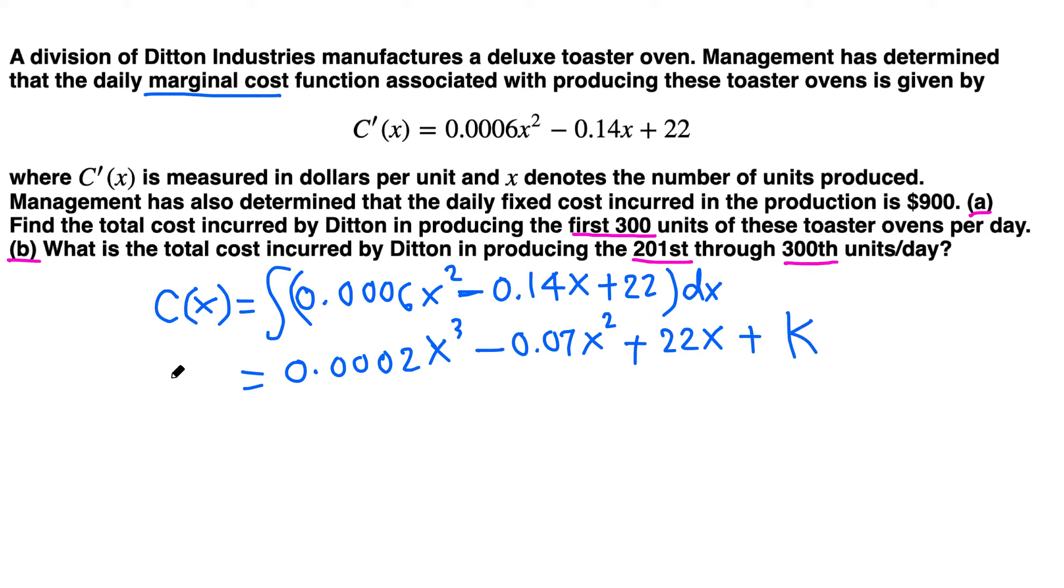C is already used, let's use some other letter for the constant, k. So that's the cost function. This k, in fact, is the constant cost, which in this case is given as $900. So C(x) is 0.0002x³ - 0.07x² + 22x + 900. This is the cost of producing x number of items, x units, starting from 0.